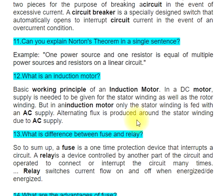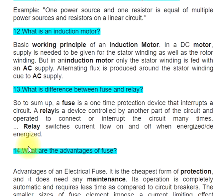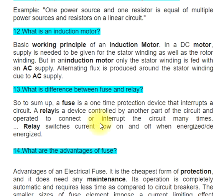Question 13: What is the difference between a fuse and a relay? A fuse is a one-time protection device that interrupts a circuit. A relay is a device controlled by another part of the circuit and operated to connect or interrupt the circuit many times. Relay switches current flow on and off when energized or de-energized.